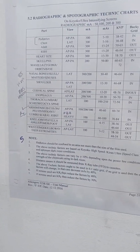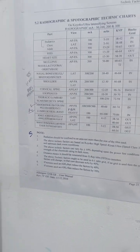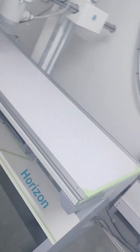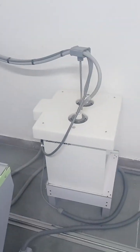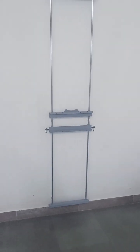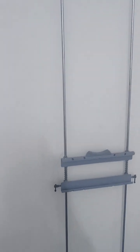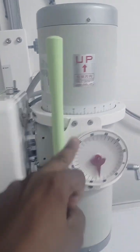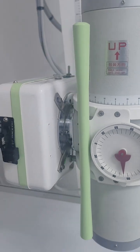These are the couch CR system and the three-phase generator. Here is the tray for taking the cassette. This is a standing x-ray unit, and these are the 350 mA rotating anode tube.